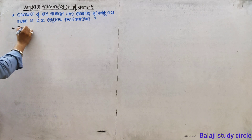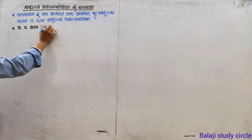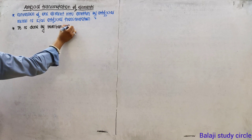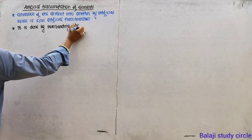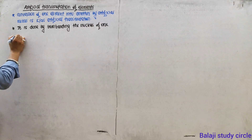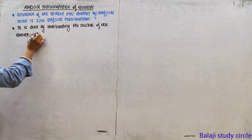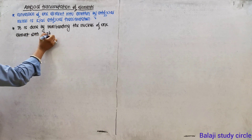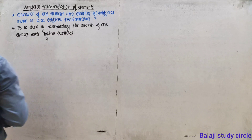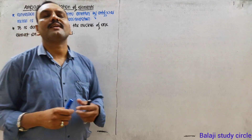It is done by bombarding the nucleus of one element with lighter particles. These lighter particles are called the projectile.